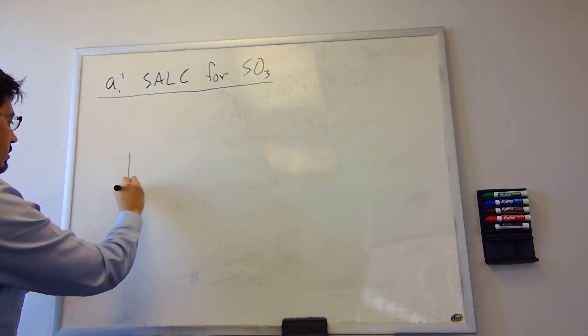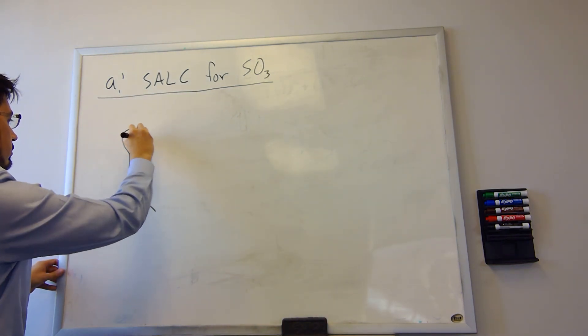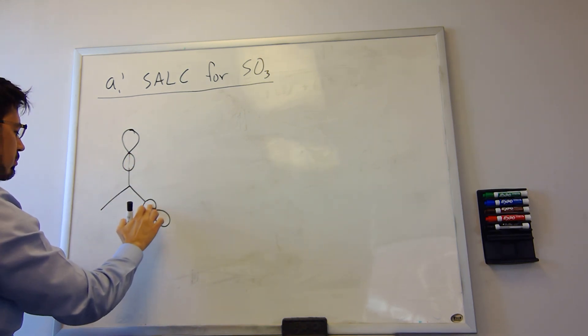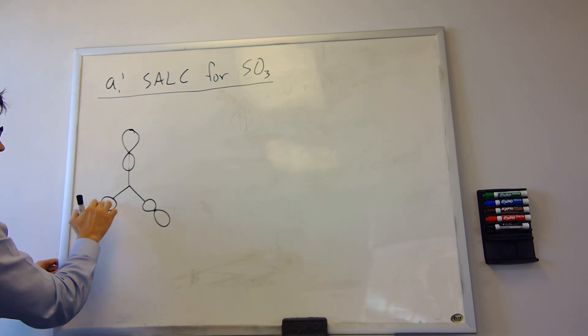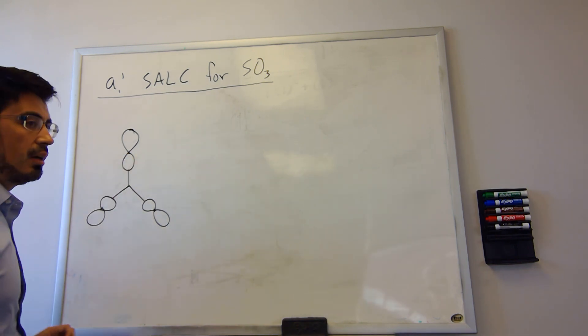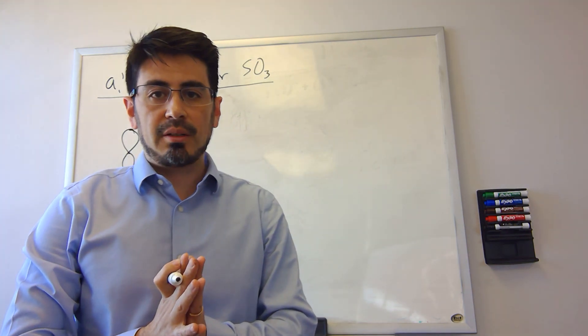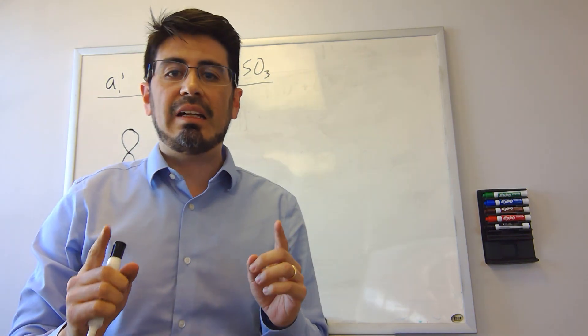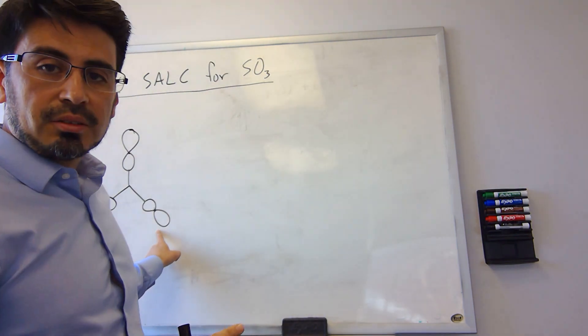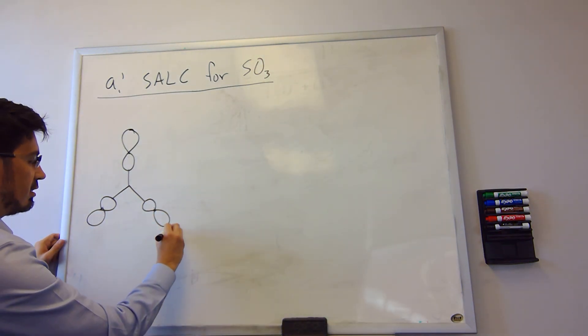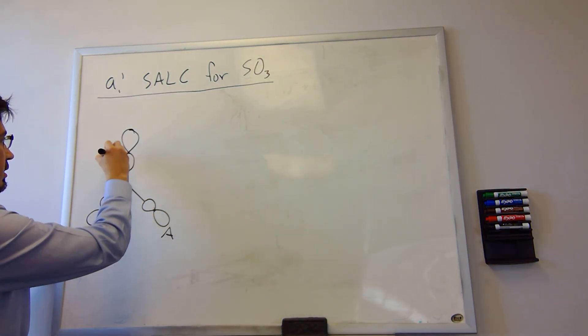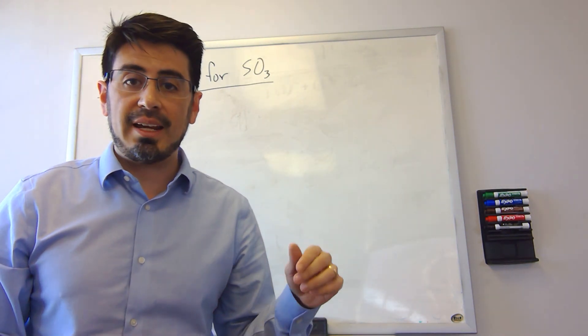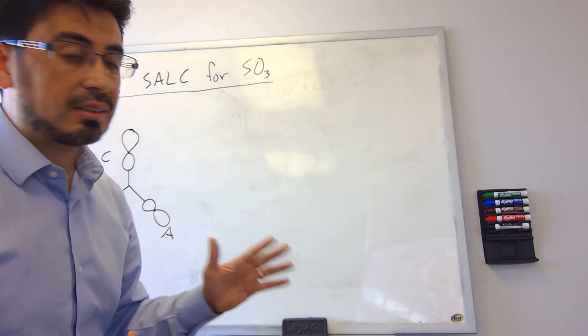So we drew it out this way, and we had applied the projection operator to a test wave function. The test wave function can be any of the orbitals that are going to be part of our group orbitals, so in this case it's called this A, B, and C. These are the oxygen group orbitals and we had picked A as our test wave function.